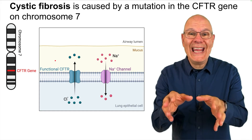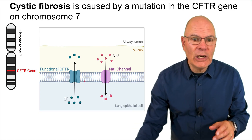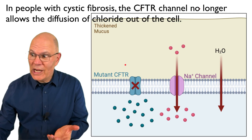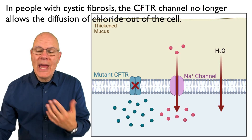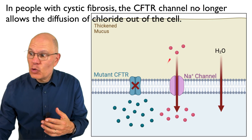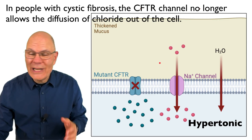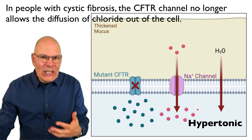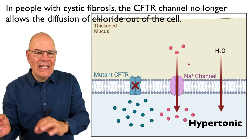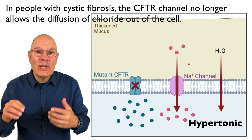Cystic fibrosis is caused by a mutation in the CFTR gene on chromosome 7. This gene normally codes for a protein channel that controls the movement of chloride ions across cell membranes. In people with cystic fibrosis, the mutation causes a malfunctioning protein channel that blocks the passage of chloride. That traps chloride inside the cells, which in turn draws sodium ions through a sodium channel. Now the inside of the cell is extremely hypertonic to the fluid outside, and that draws water into the cell by osmosis, essentially drying out the fluid outside — so the thin, slippery mucus lining the airways becomes thick and clogged.